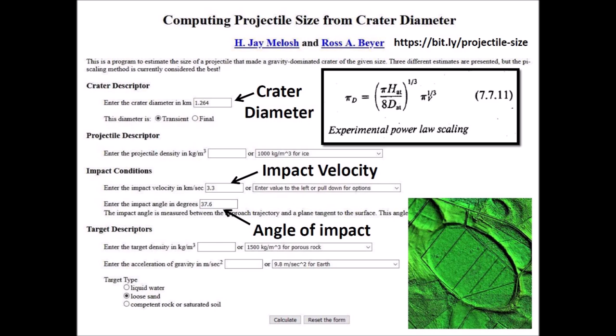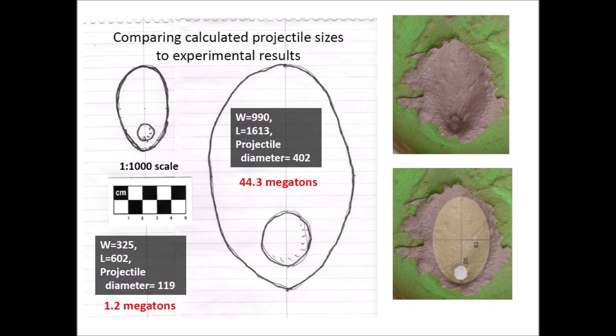The program requires the crater diameter, the impact velocity, the angle of impact, and information about the physical characteristics of the projectile and the target material. I tried to verify the results of the projectile size calculator by drawing ellipses representing Carolina Bays and the calculated projectiles at a 1-to-1000 scale and comparing the images against experimental results. I concluded that the results based on this calculator were reasonable.